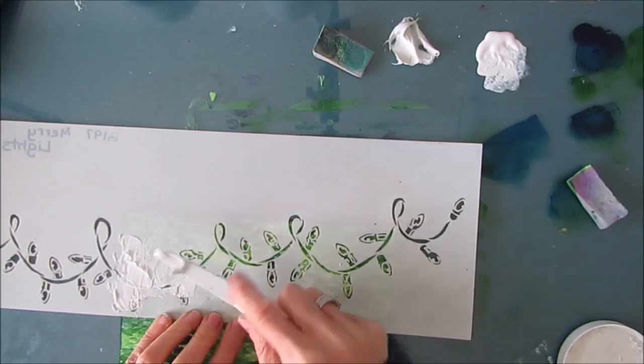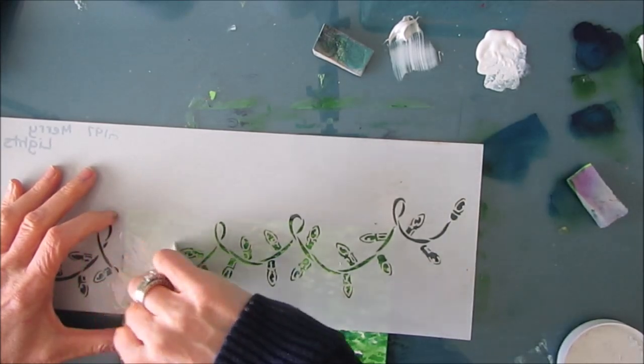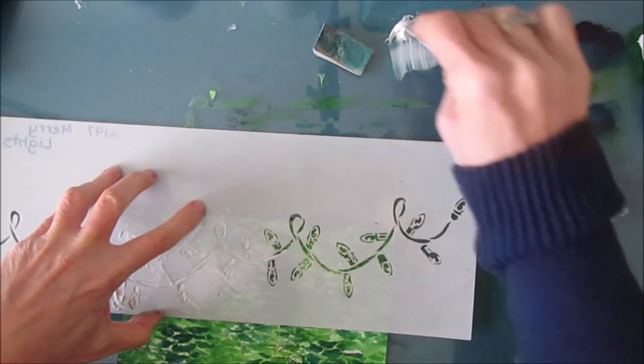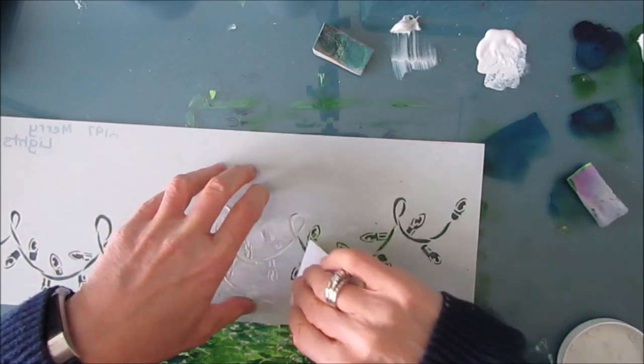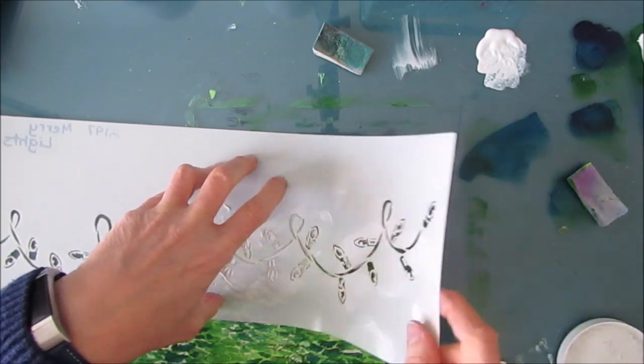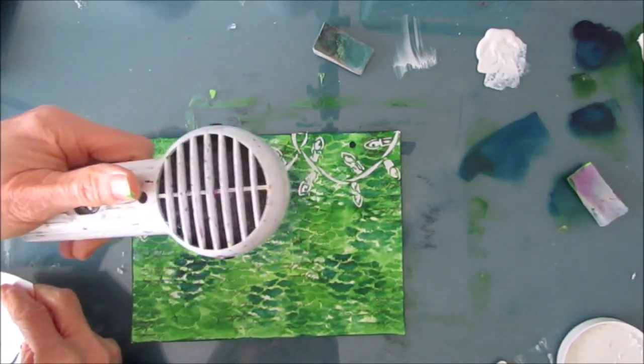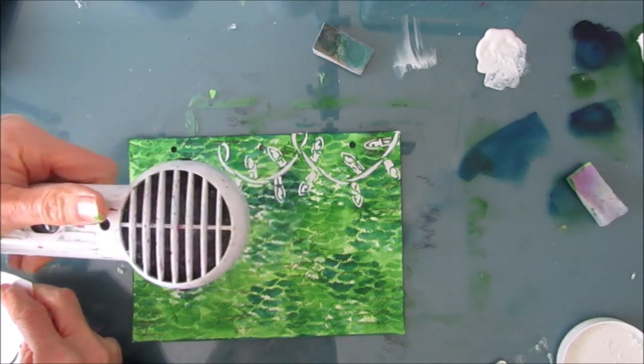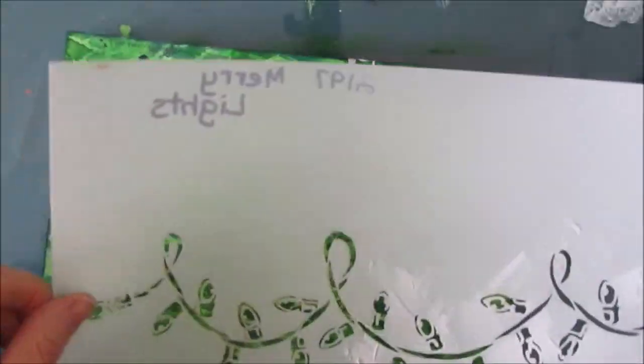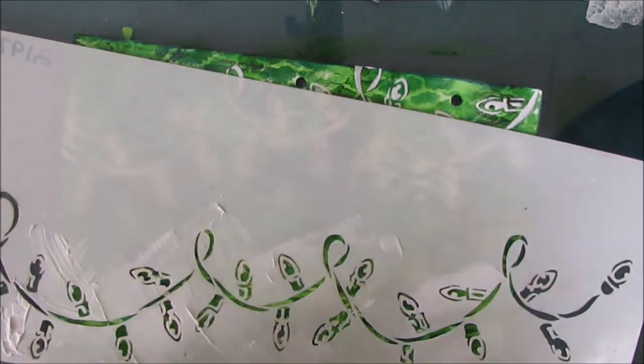This stencil is called Merry Lights and it's from the Crafter's Workshop. I tried using a palette knife but my preferred way is always going back to key cards or old gift cards. I'm using TCW modeling paste through the stencil and I'm putting this light garland across the page. I'm giving that a dry with the heat tool and then replacing the stencil to add the next string of lights.